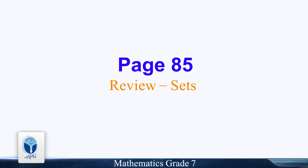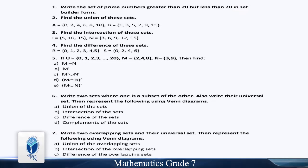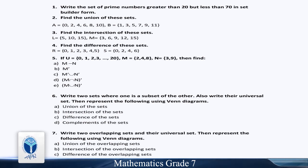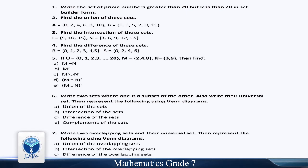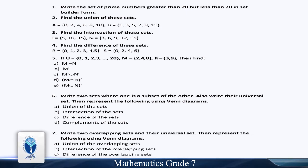Page 85: Review of disjoint sets. Write the prime numbers greater than 20 but less than 70 in set-builder form. Find the union of these sets: A = {0, 2, 4, 6, 8, 10} and B = {1, 3, 5, 7, 9, 11}. Find the intersection of these sets: L = {5, 10, 15} and M = {3, 6, 9, 12, 15}. Find the difference of these sets: R = {0, 1, 2, 3, 4, 5} and {0, 2, 4, 6}.